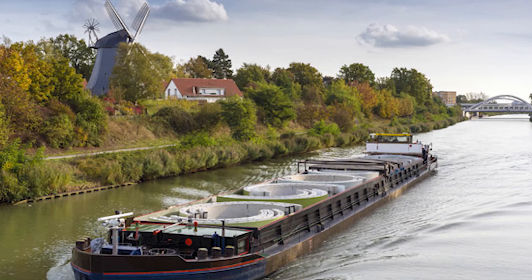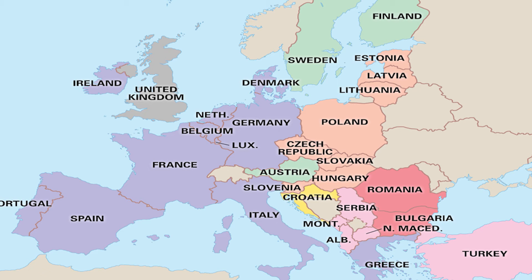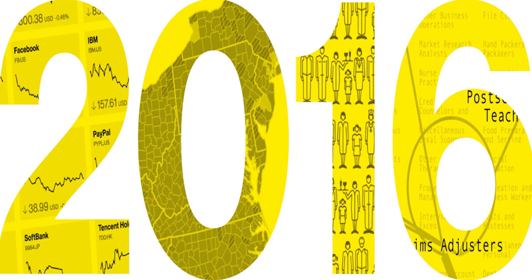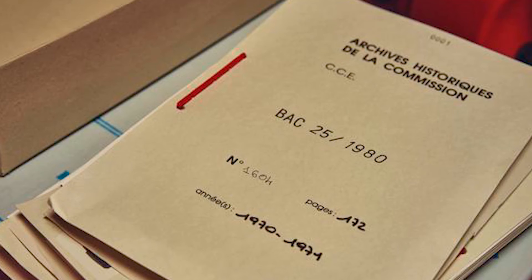For road, railway, and inland waterway transport, the total infrastructure costs across 28 European regions were estimated at 267 billion dollars for the year 2016. Further details of the investment are summarized in the table below. Please check the official European Union document titled 'Overview of Transport Infrastructure Expenditure and Costs' for more insights.